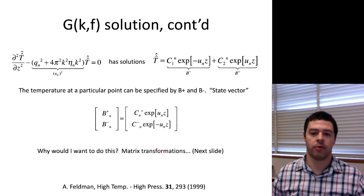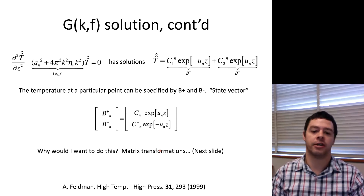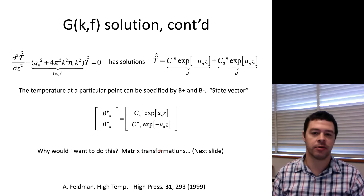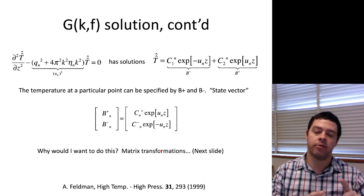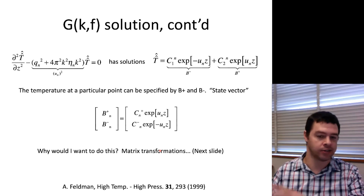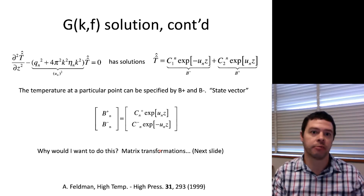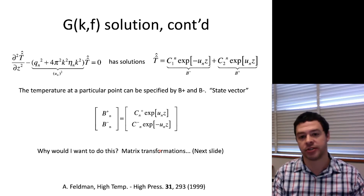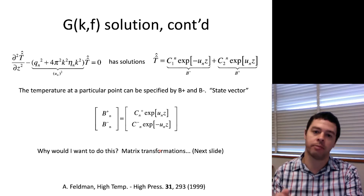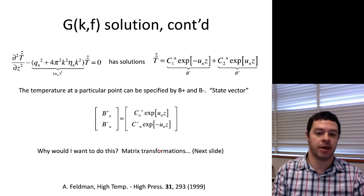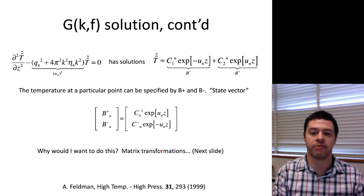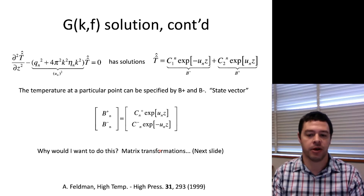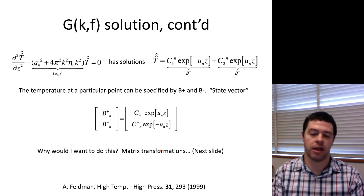Why would I want to do this? It has to do with matrix transformations. In summary, what I'm going to do is use a series of matrix transformations to allow me to use information about one point in the system to figure out temperatures at other points. One operation might be translation—if I know the temperature at one position, I can use a translation matrix to find it at a different position. Or if I need to go across an interface, I can use a matrix transformation to find the state on the other side.